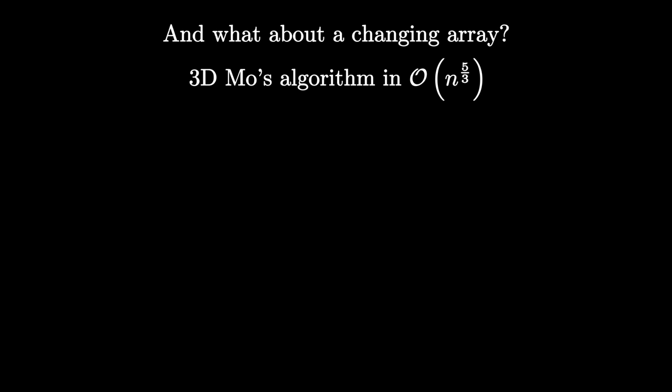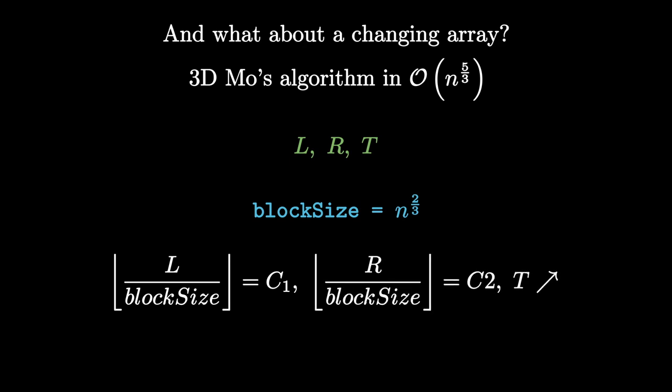It's the same as the usual Moz algorithm, but in addition to the left and right boundaries, we also have the time variable. And now the block size isn't the square root of n, but n to the power of 2 thirds. And for the two variables that are inside their blocks, we consistently move the remaining one forward. You can read more about this algorithm in the analysis of one of the contest tasks. The link will be in the description.